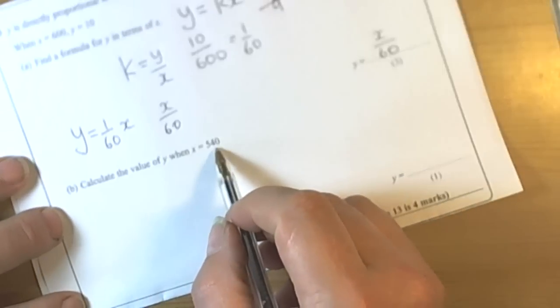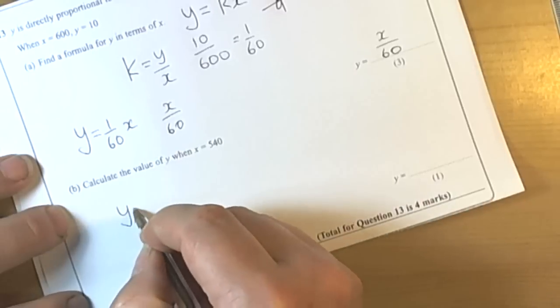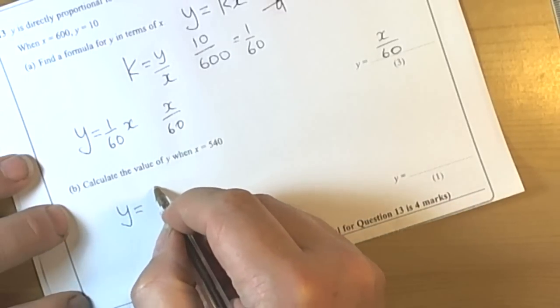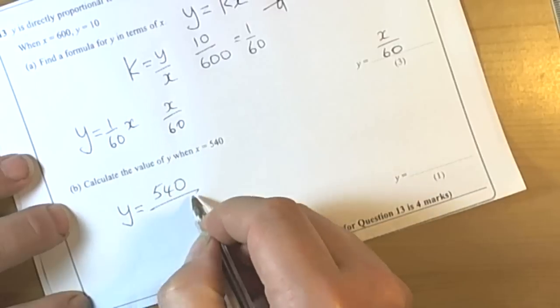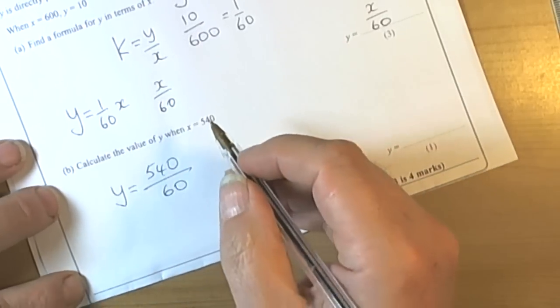It then says calculate the value of y when x is 540. So we've got y equals, replace the x in the formula with 540 and divide that by 60.